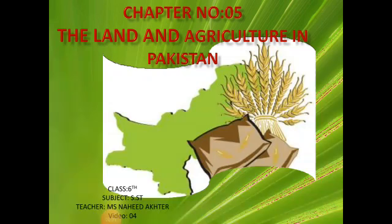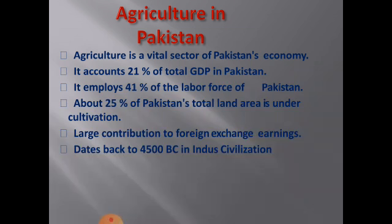Bismillahirrahmanirrahim, Assalamu Alaykum students, I'm Miss Nahid from KNCRE. My new topic is Chapter 5: The Land and Agriculture in Pakistan. We will discuss agriculture in Pakistan. Pakistan is an agricultural land; 70% of its population is associated with this occupation, and industries also get raw materials from the agriculture sector. The economy is dependent on the agriculture sector.